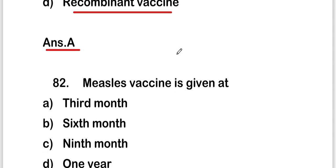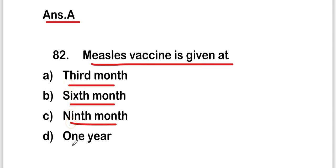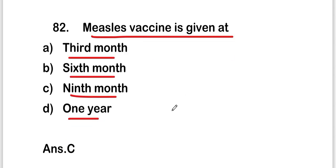The next question is: measles vaccine is given at third month, sixth month, nine months, or one year? The right answer is option C — nine months. Measles vaccine is given at the ninth month.